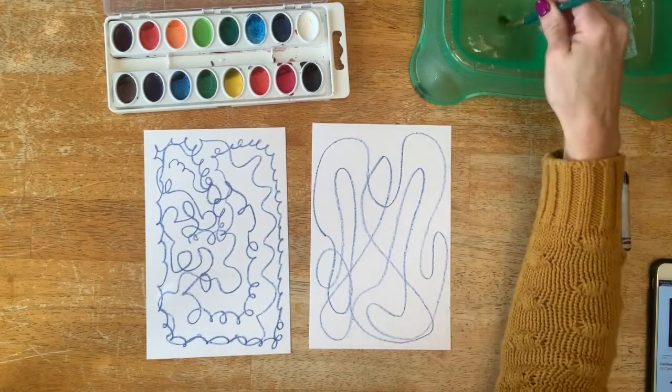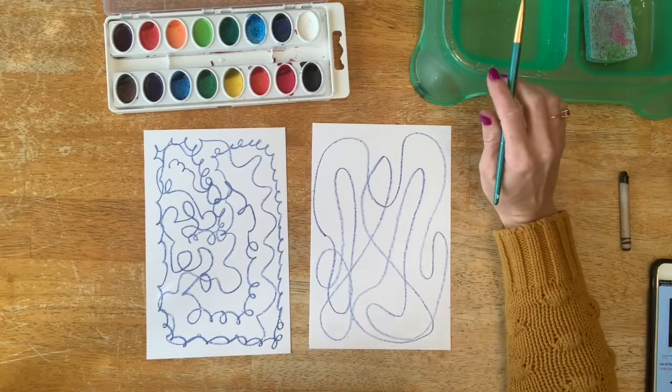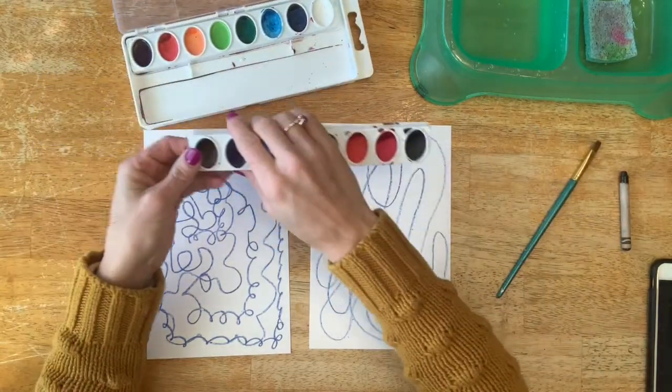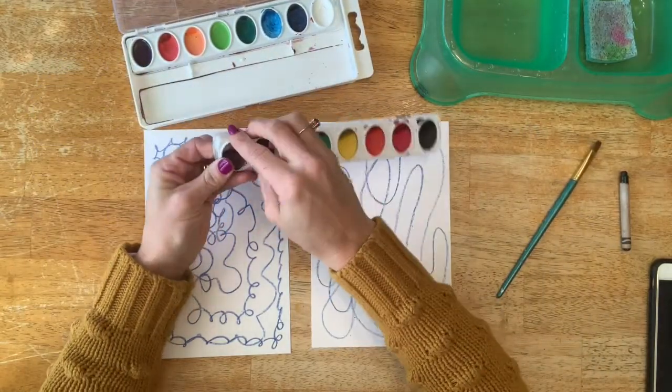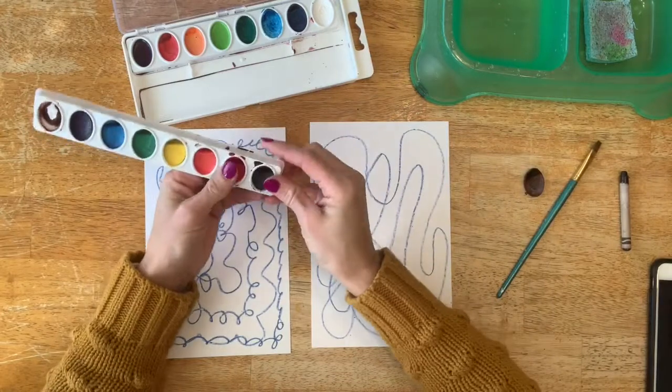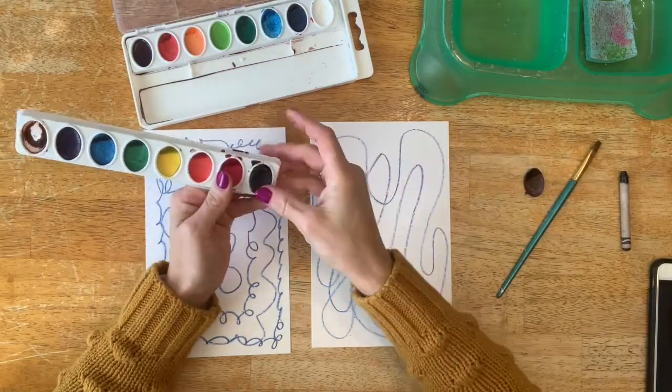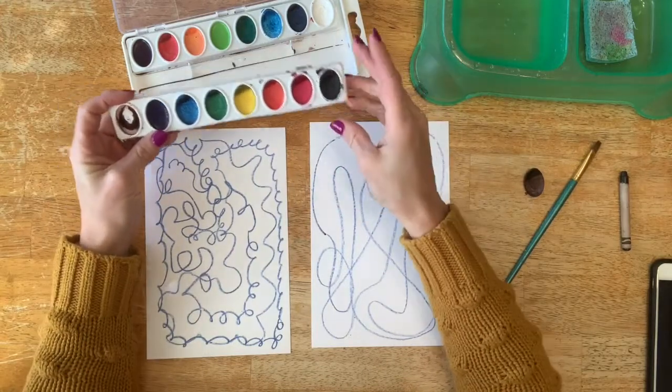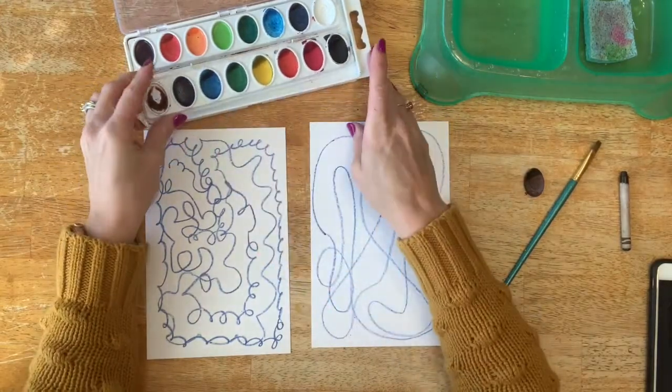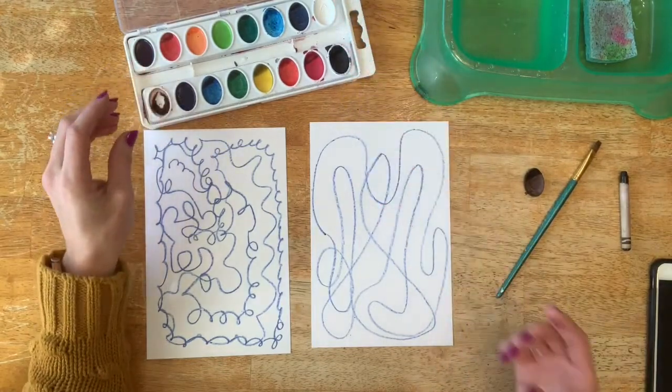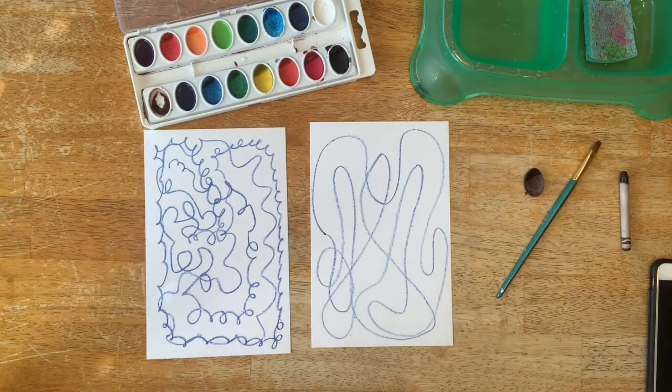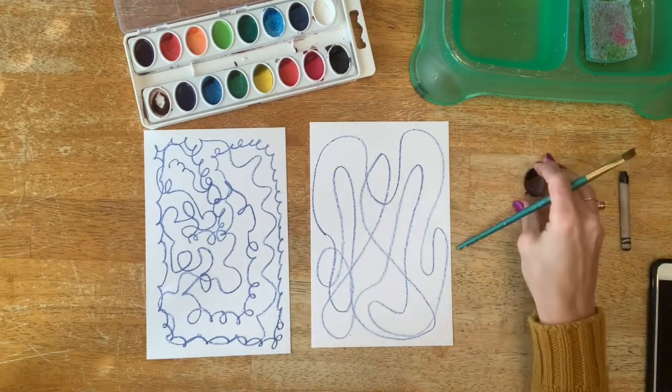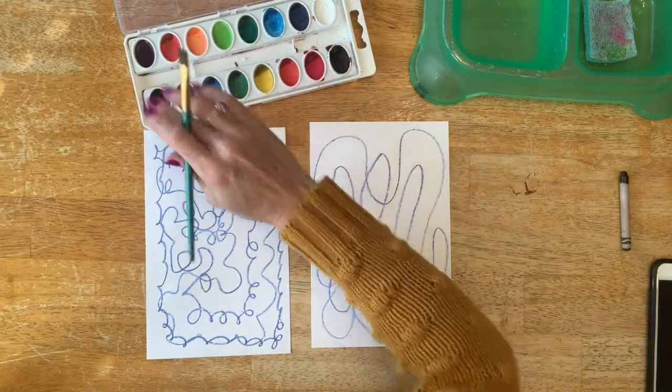One thing I do like to do for kindergarten is I like to take out black and brown. These are the trays I have right now. I like to just pop out the black and the brown. When they're dry, you can just pop them out. I just like to give them the colors because they have a tendency to be messy with the black and brown. They kind of don't know how to use it and not let it ruin all of their other colors.